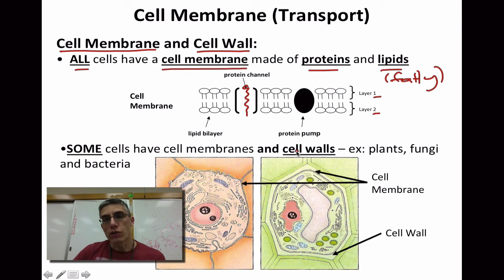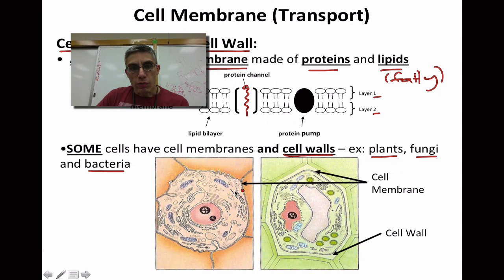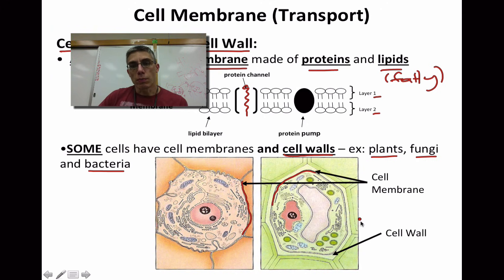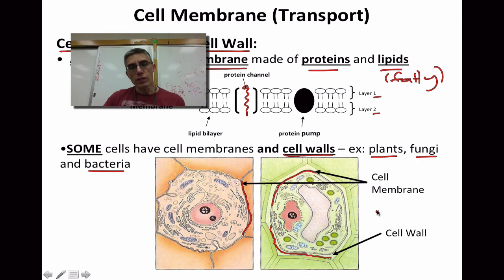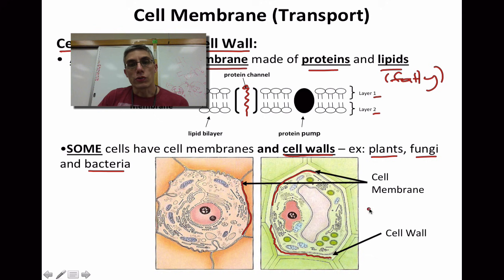Some cells have cell membranes and also cell walls in addition to those membranes. Organisms like plants, fungus, and even some bacteria are going to have a cell wall. Looking at the diagrams, we have an animal cell on one side and a plant cell on the other. In a plant cell we also have a cell wall right on the outside of that membrane. It provides protection and helps those plants remain upright. Those cell walls are made of cellulose — a complex carb — and one of its primary functions is to keep the plant rigid.